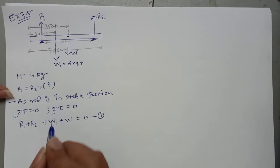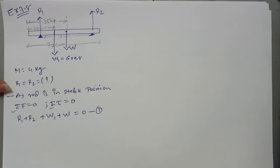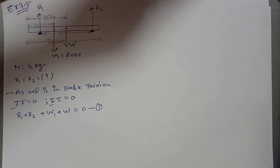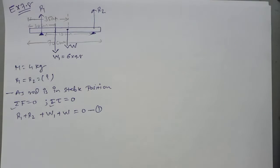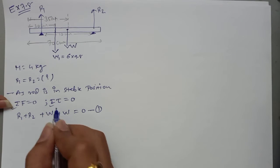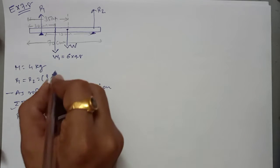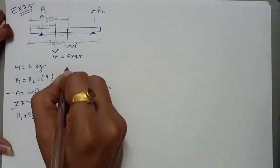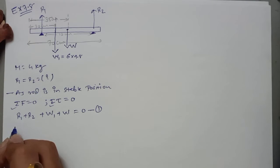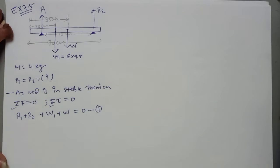Now we define summation tau equals zero. The torque formula is: magnitude of force multiplied by the perpendicular distance of the force line from the origin.